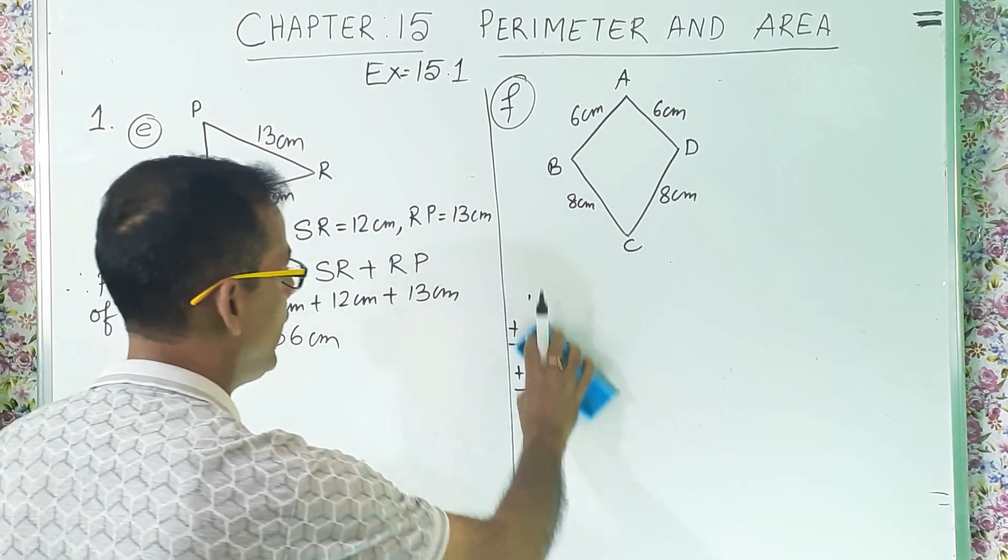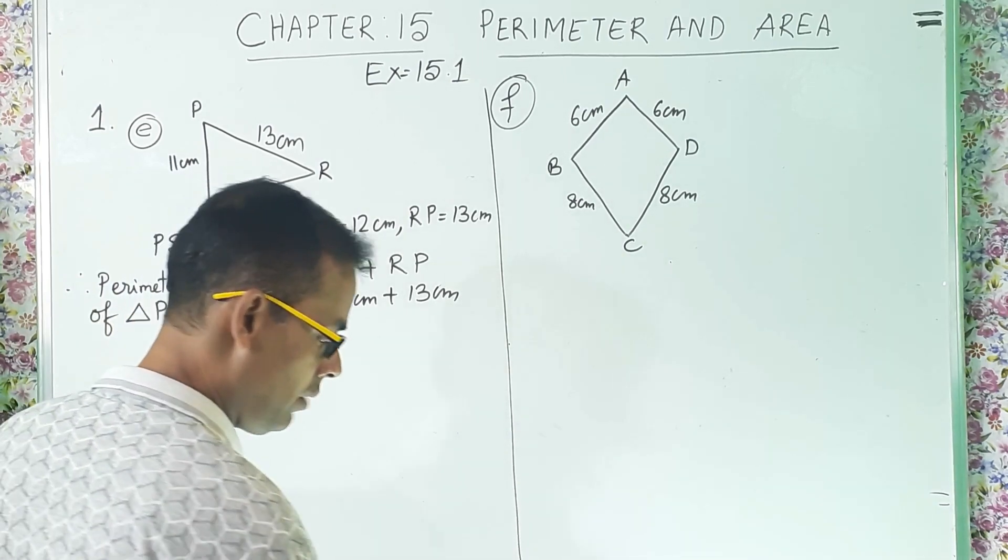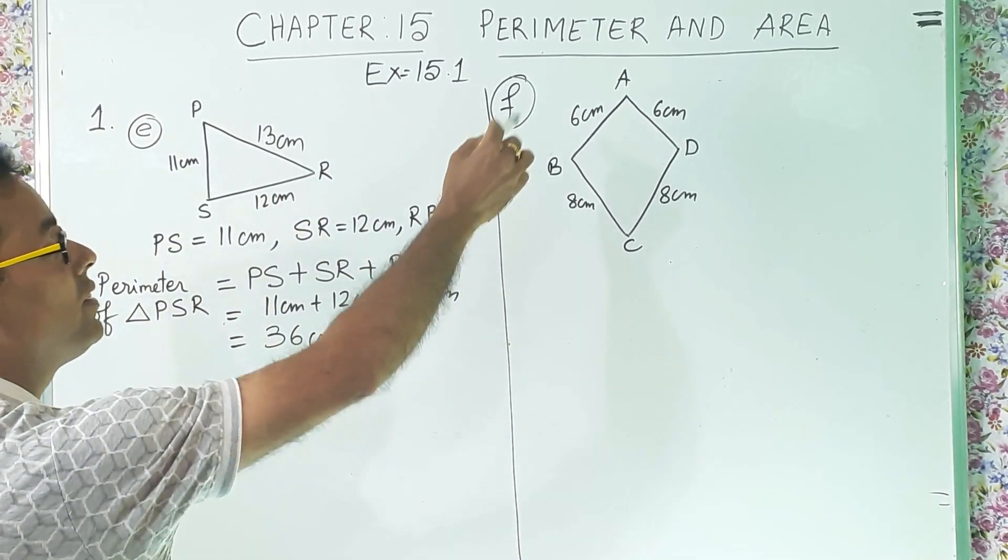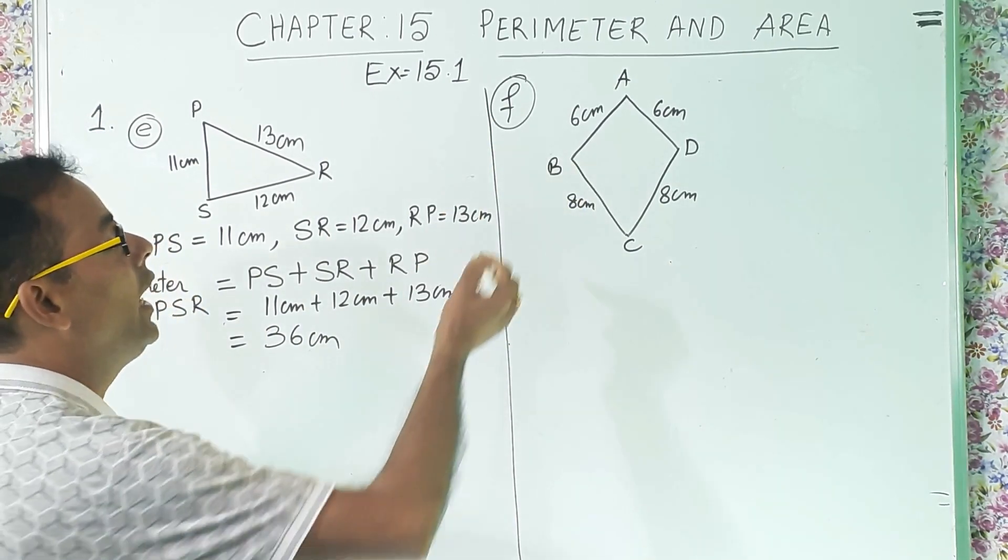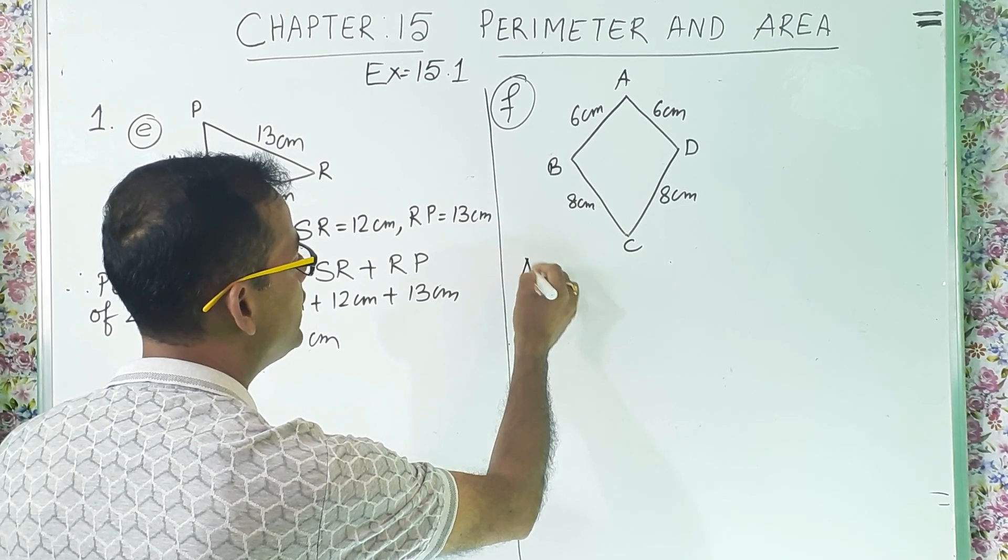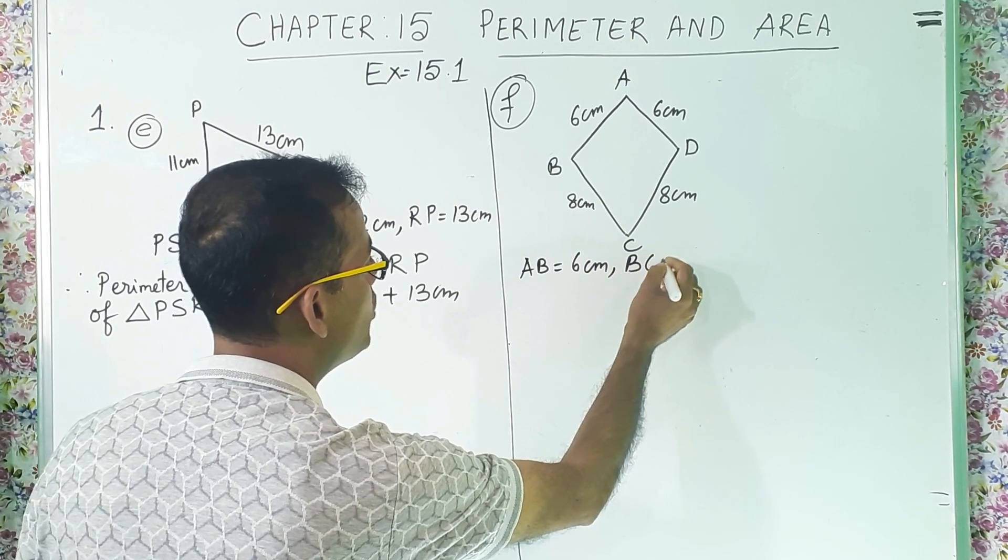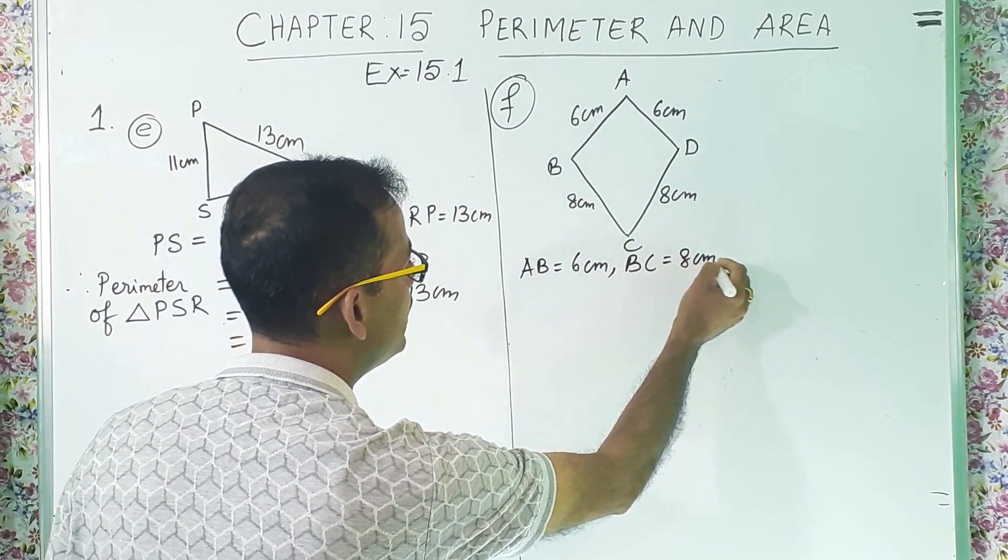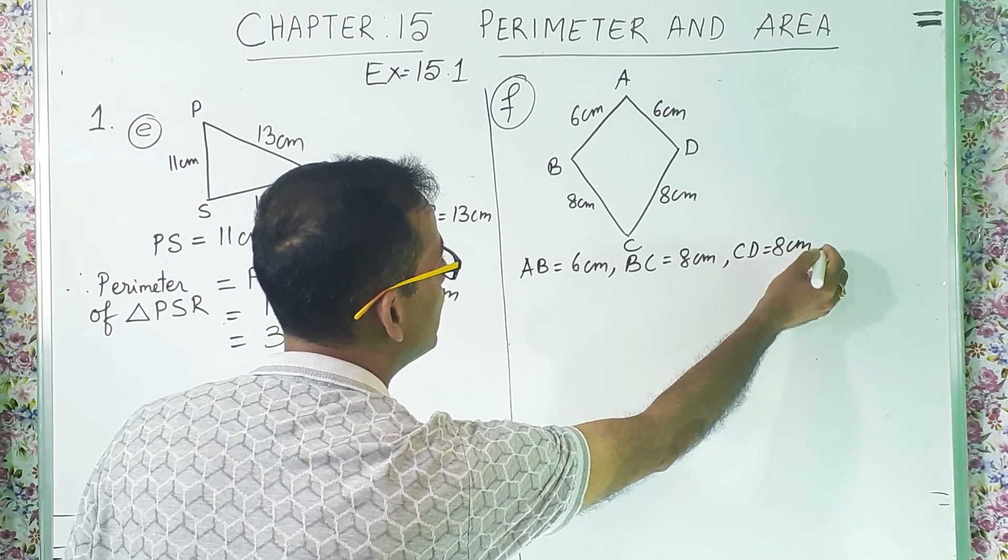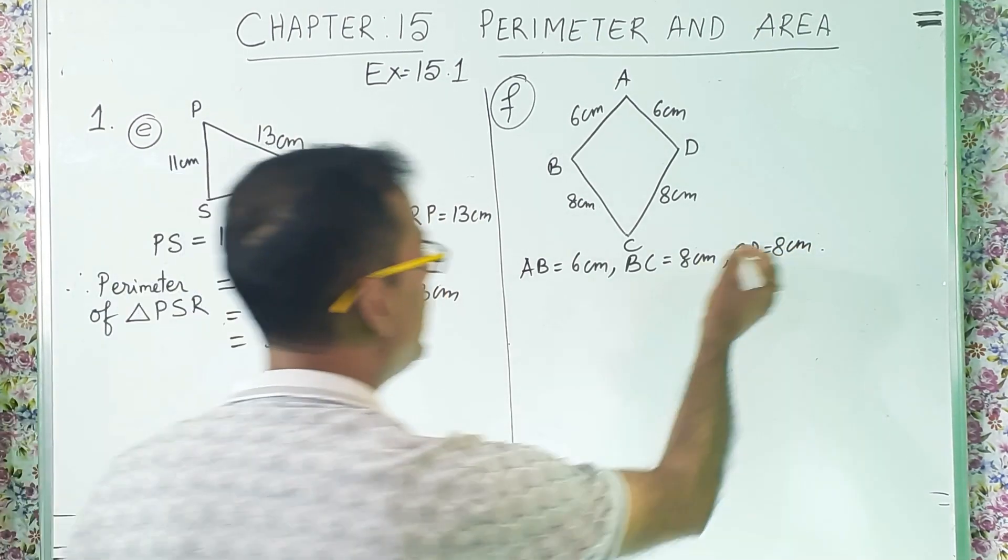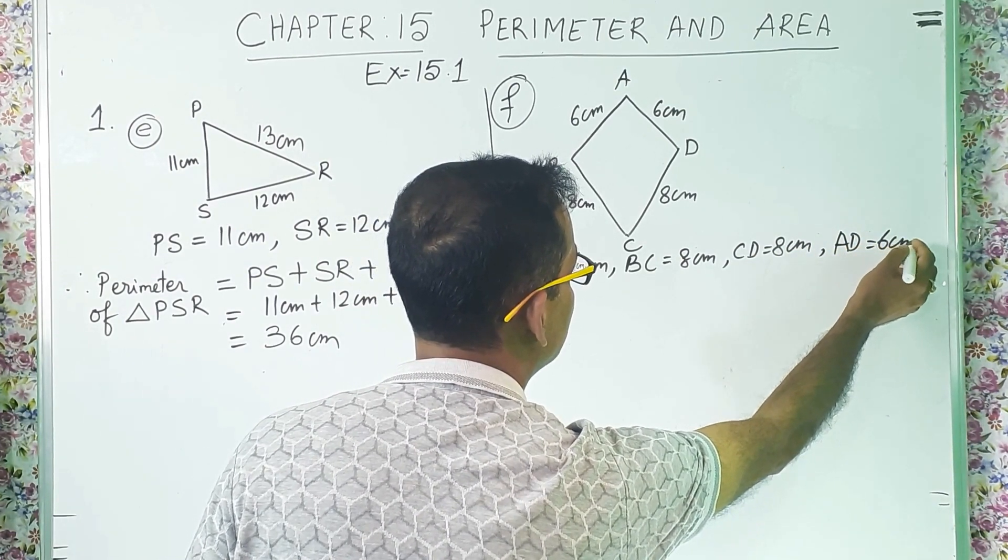I think up to this much. Now, number F. I will rub the rough work. Number F, what it is telling? This is the figure or the diagram. And we will write the information. First is AB, 6 centimeter. BC, 8 centimeter. CD, 8 centimeter. And the last one is AD, 6 centimeter.